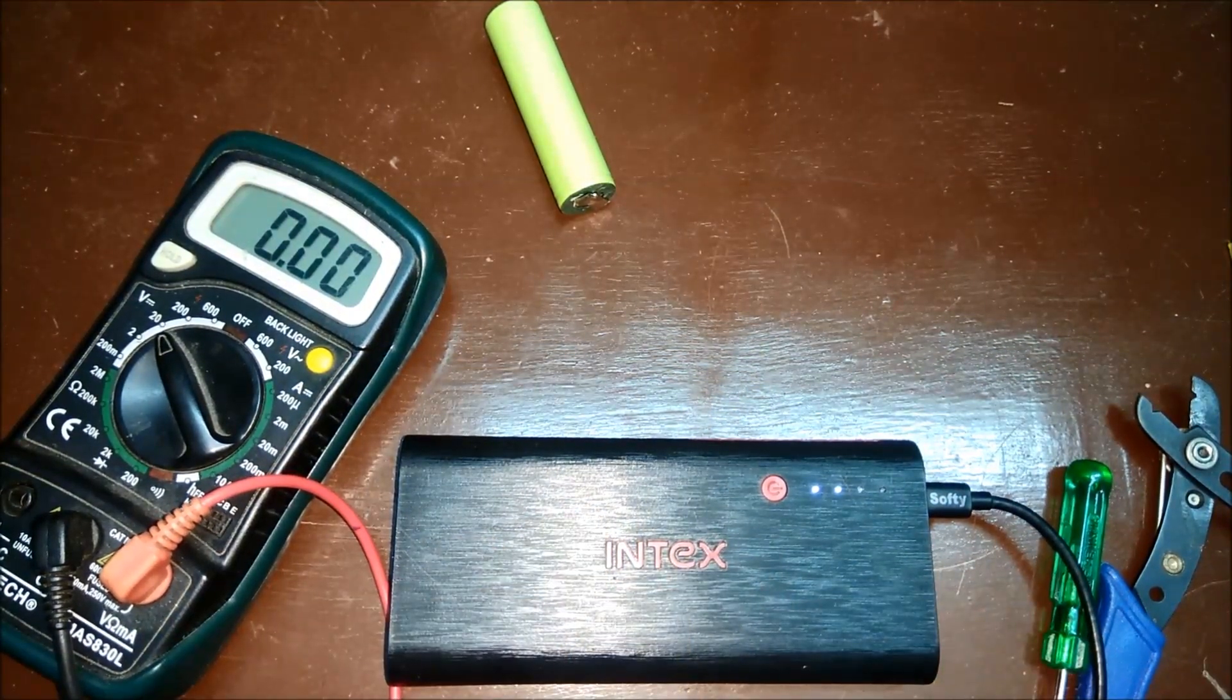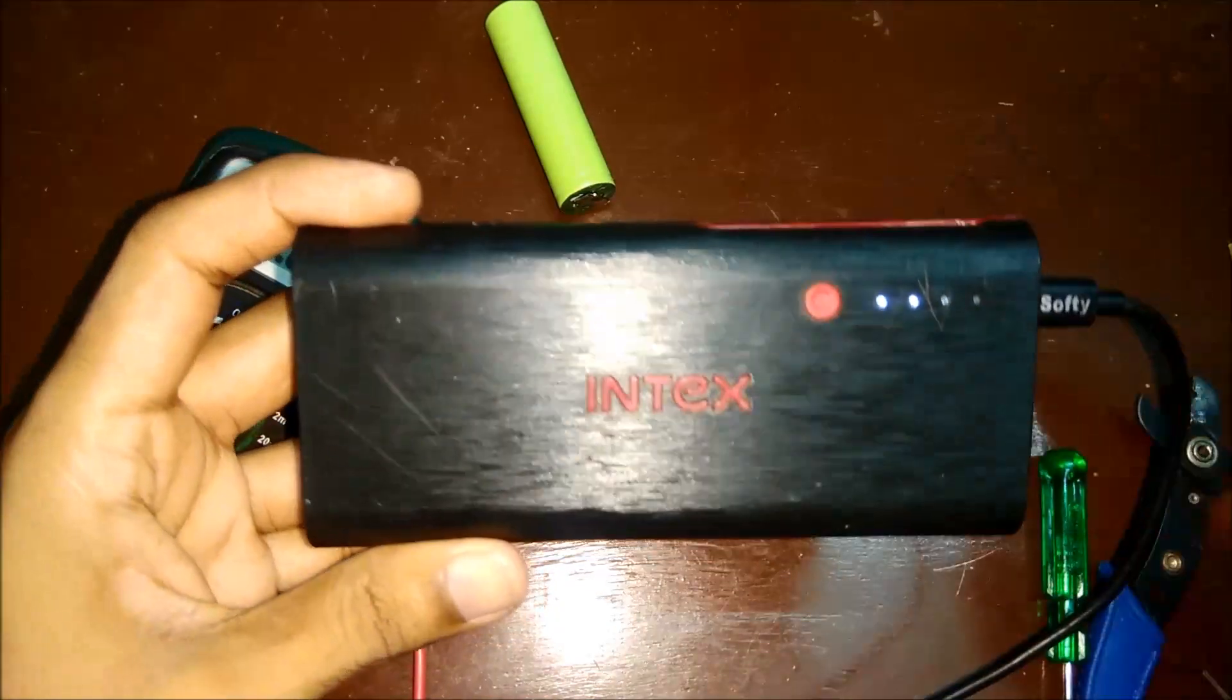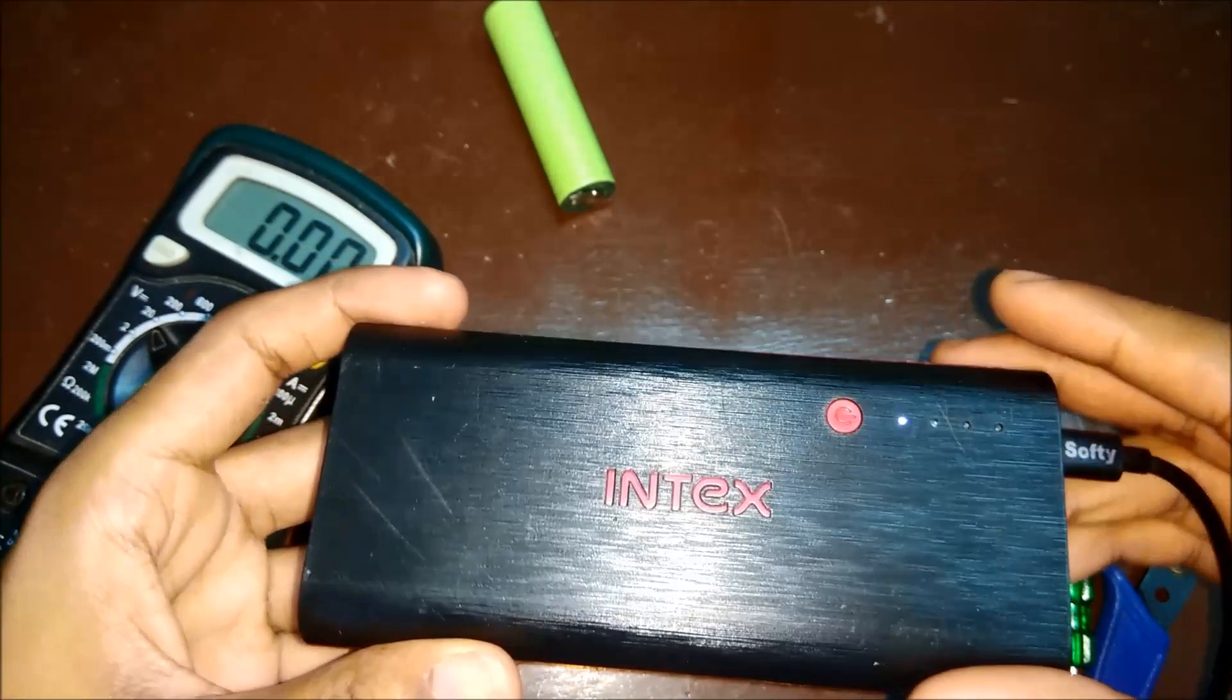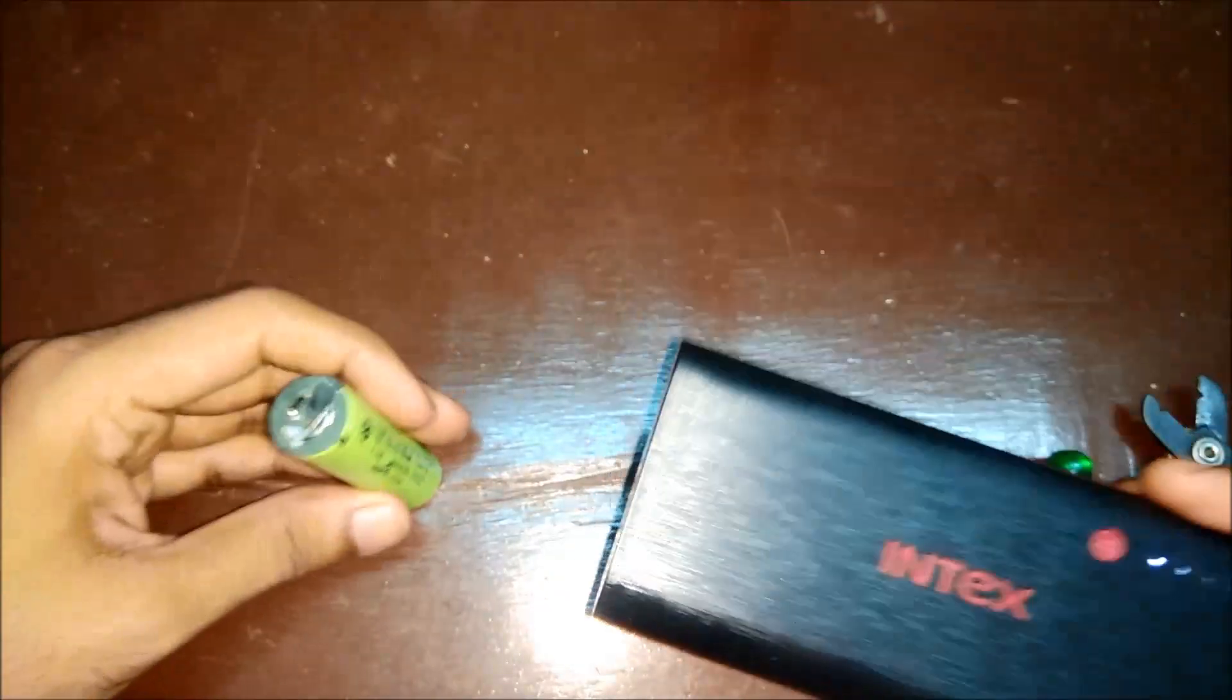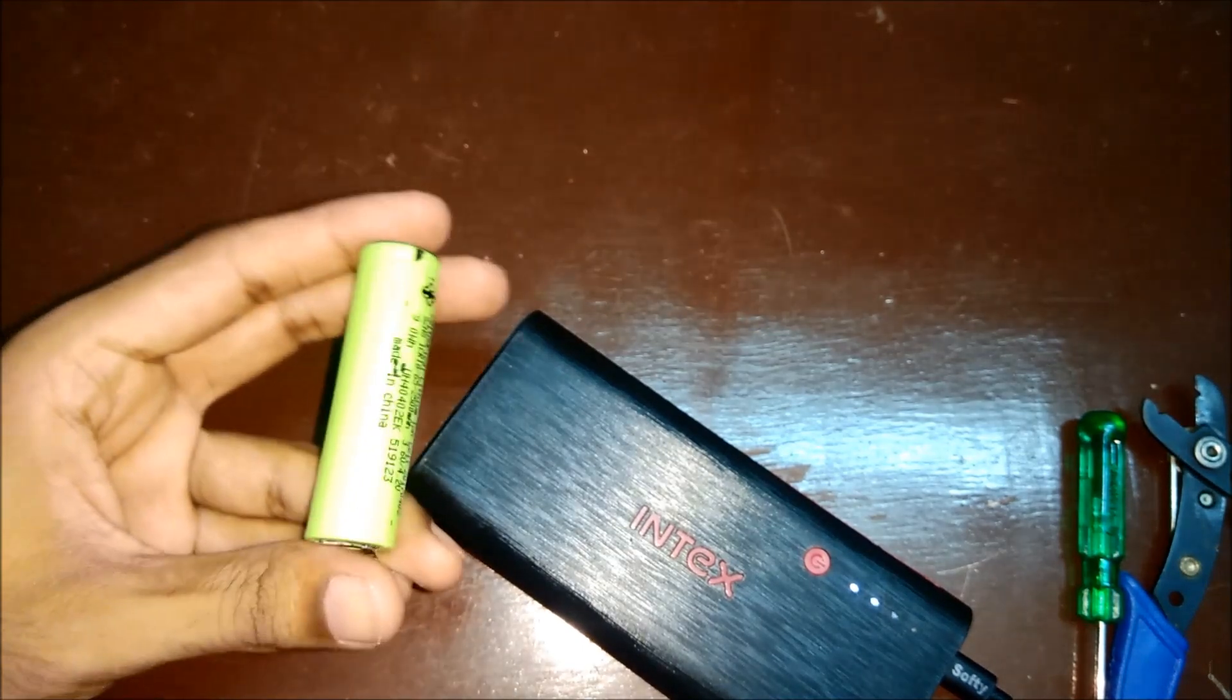So that's how you repair a power bank which is going to die or is already dead. So mostly as I said there will be one or two of the faulty batteries inside the power bank which can be replaced with a new one. Or as I did in this case you can just remove them out and leave it so that the other batteries are working good.